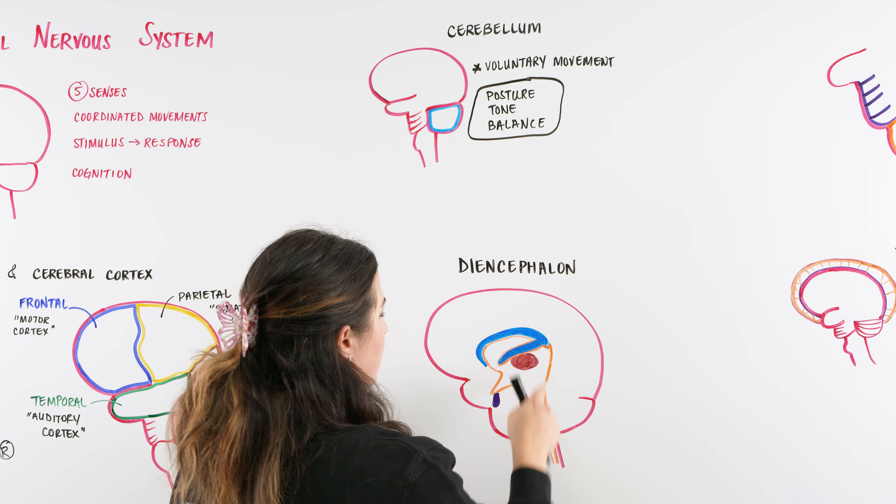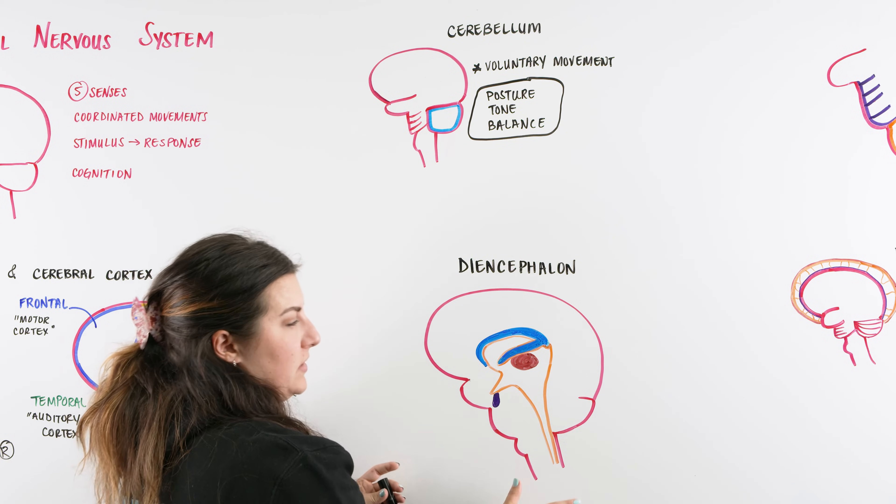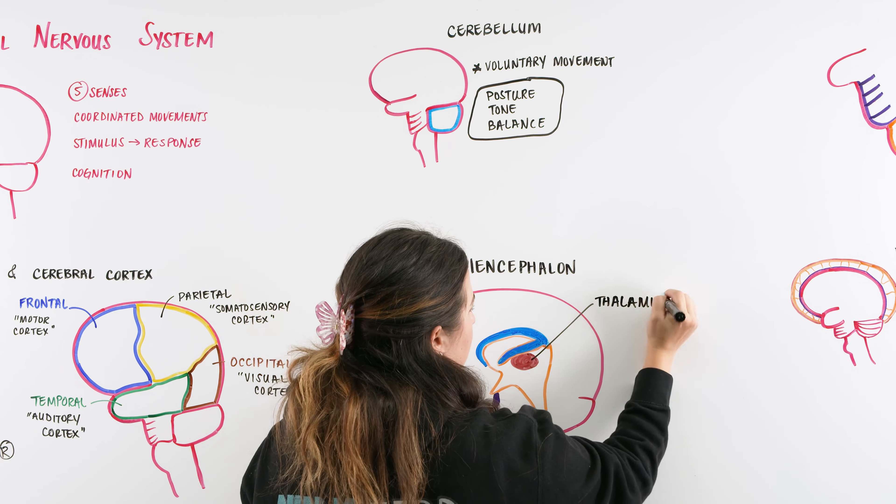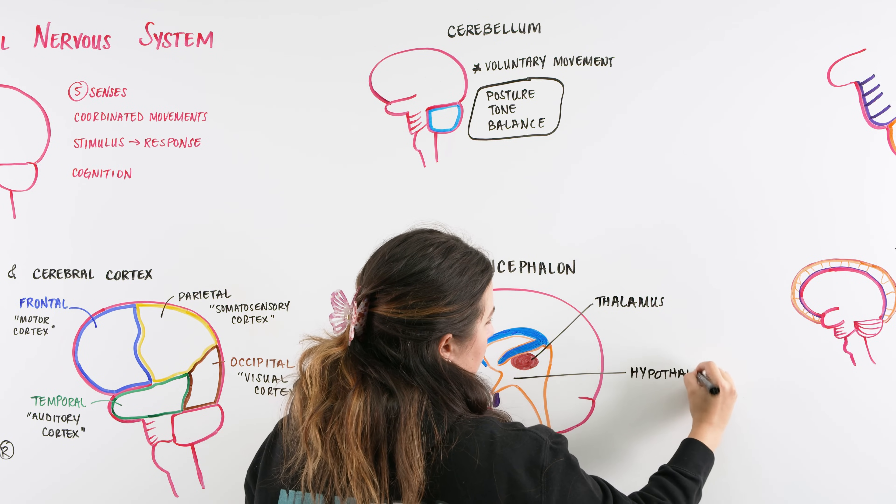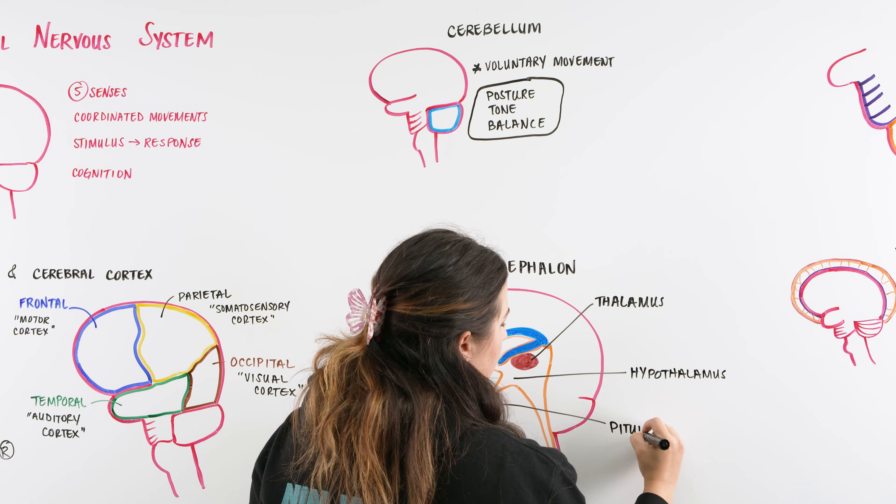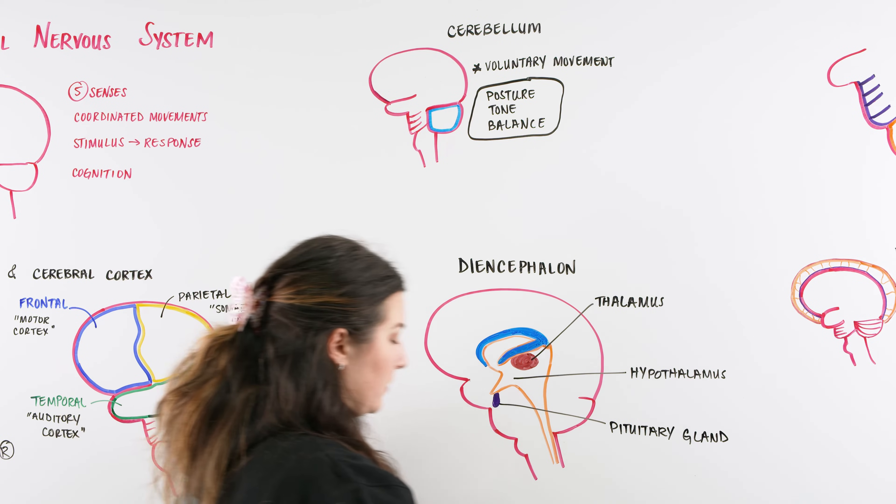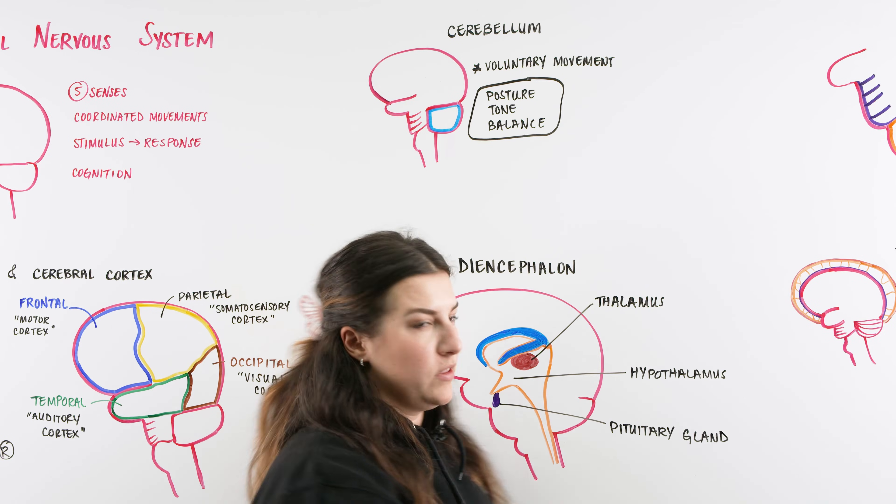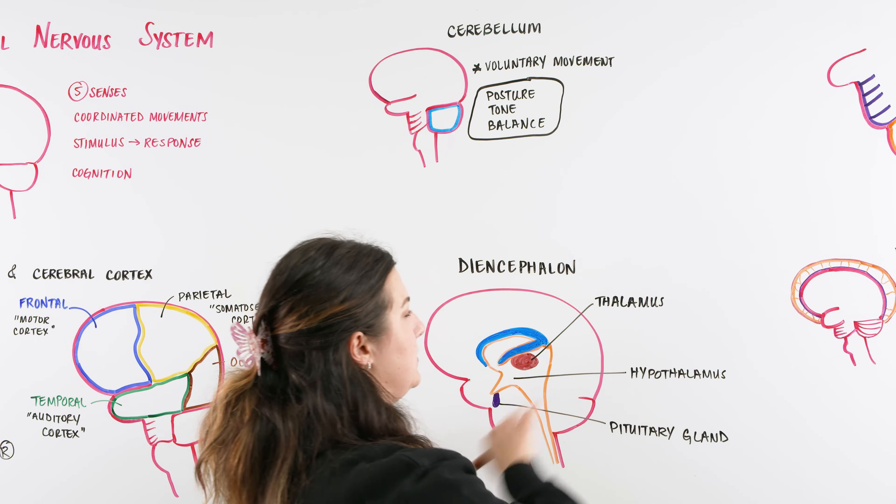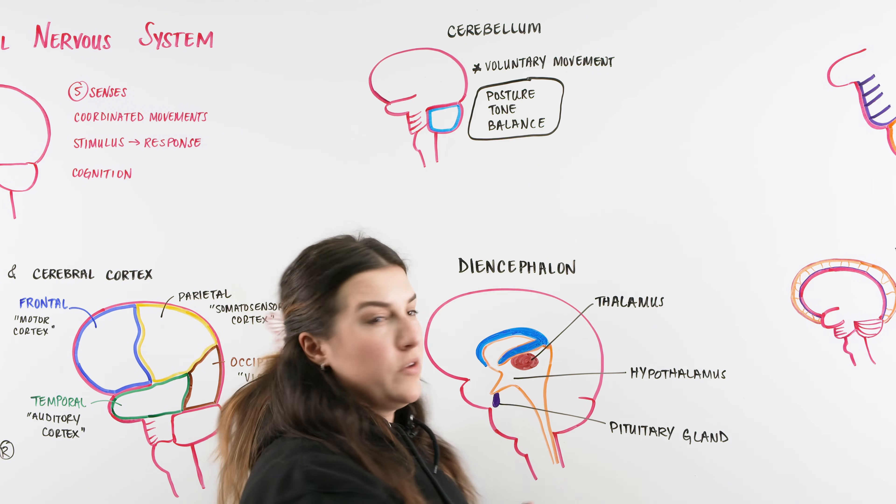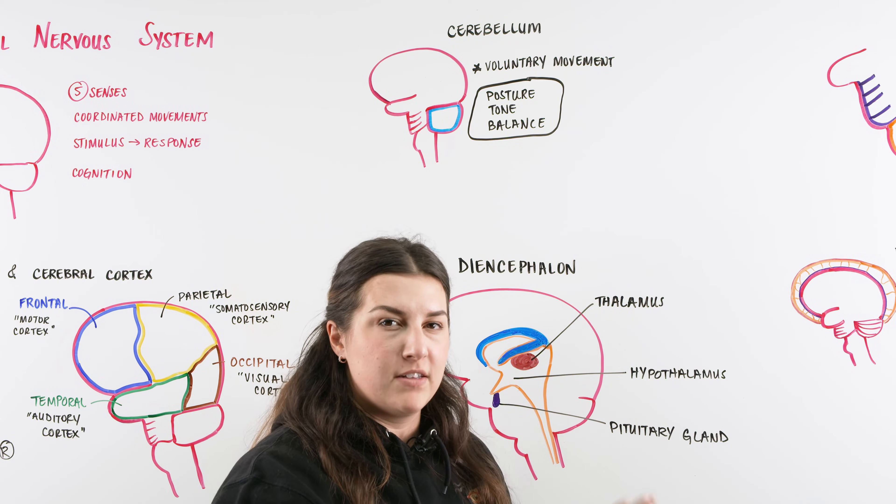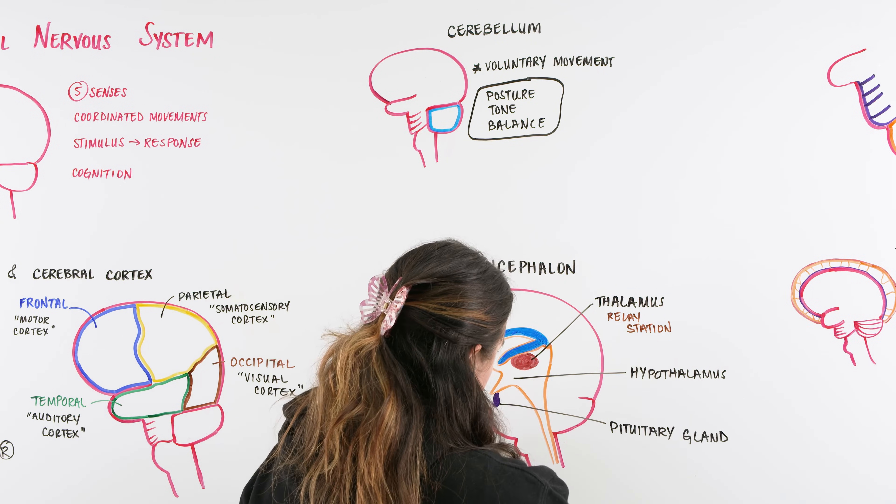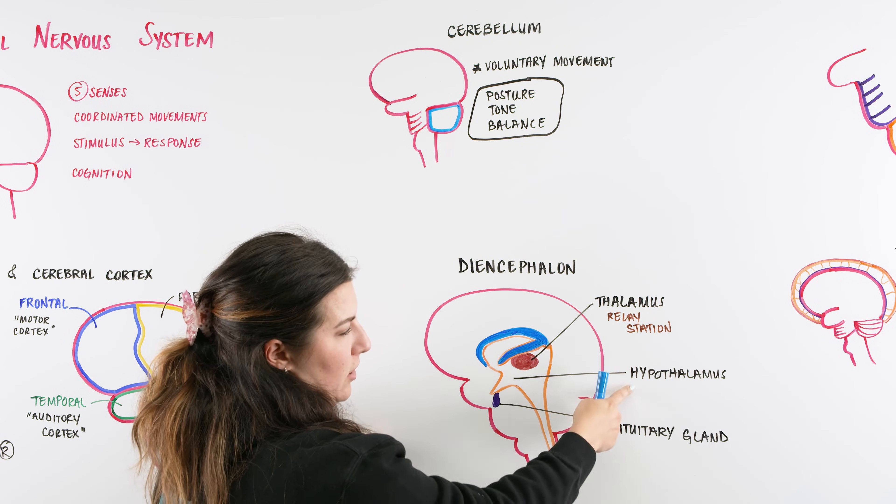Moving to the diencephalon, we're looking at the brain basically cut in half so we can focus on the middle part. We're looking at three different components: the thalamus, the hypothalamus, and the pituitary gland. The thalamus is really the relay system of the brain. It's taking messages in and sending messages out, able to relay and tell things where they need to go in order for that signal to get through and have whatever stimulus or response that we need.